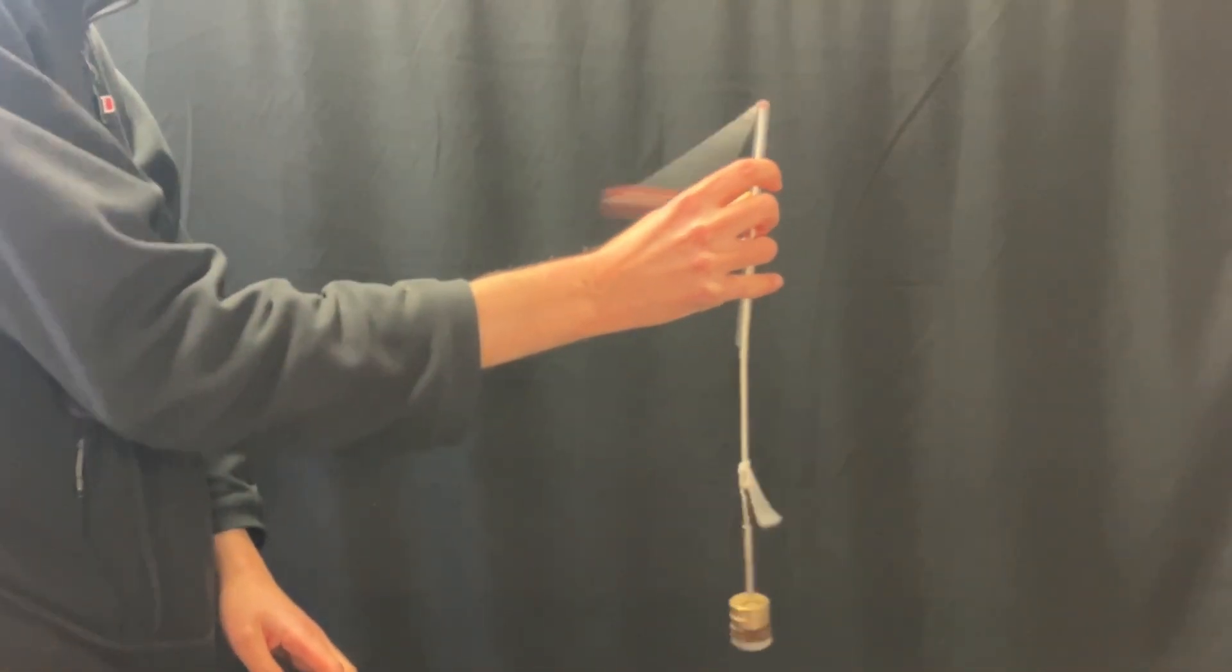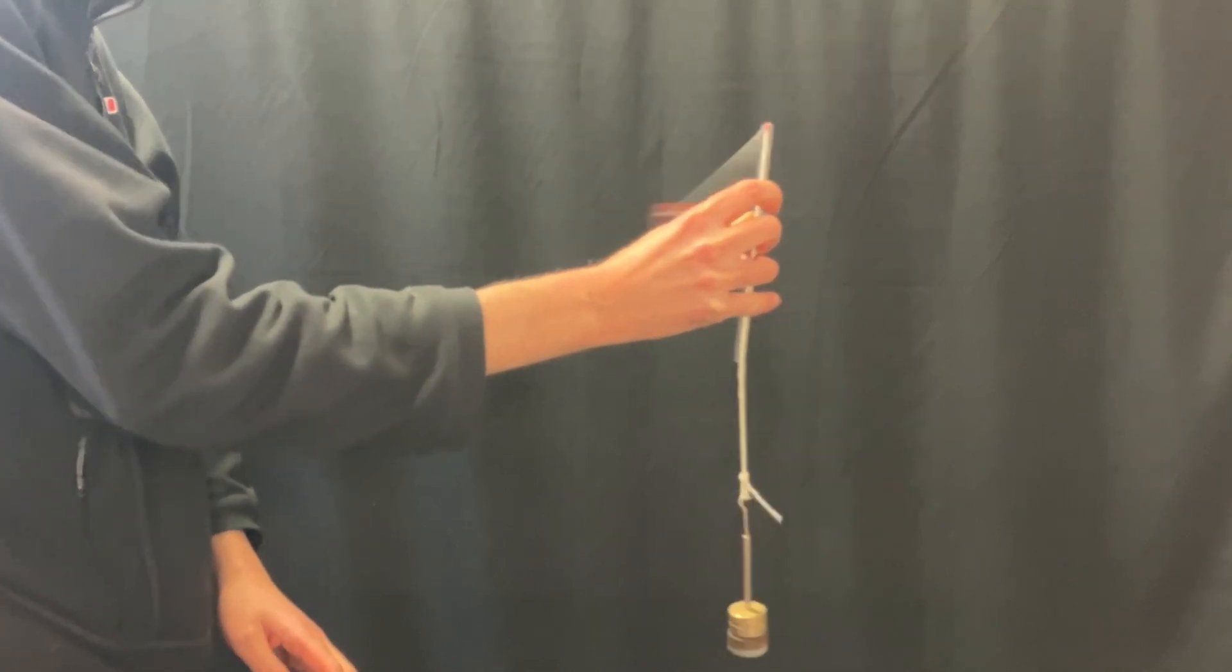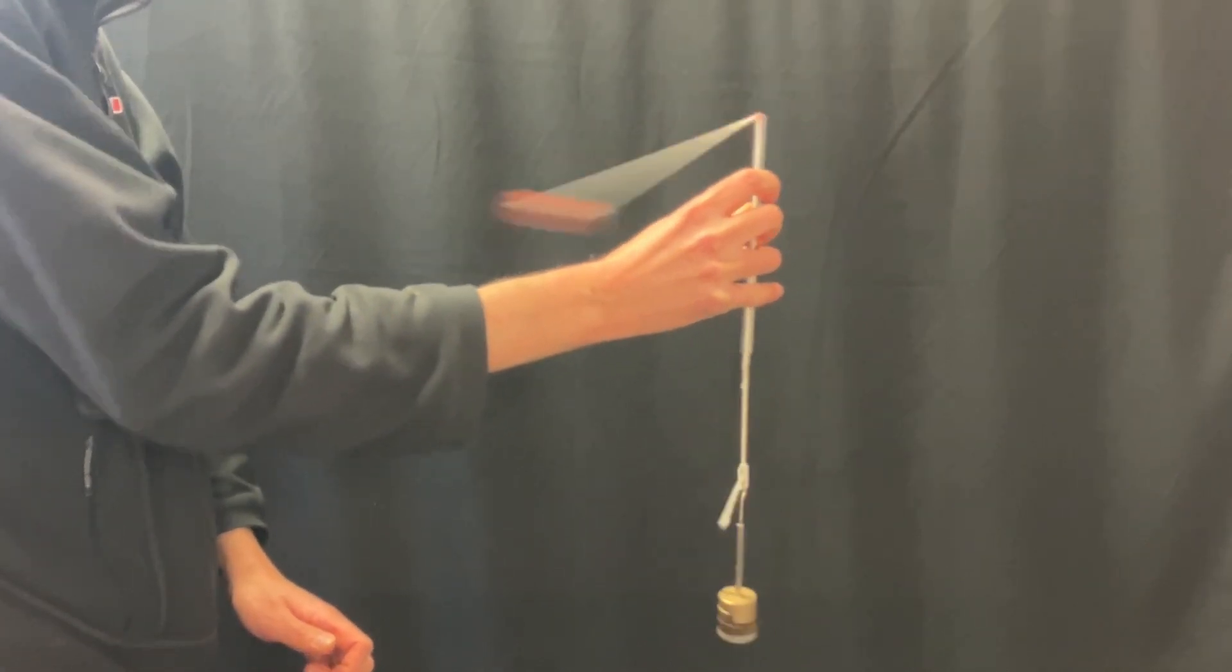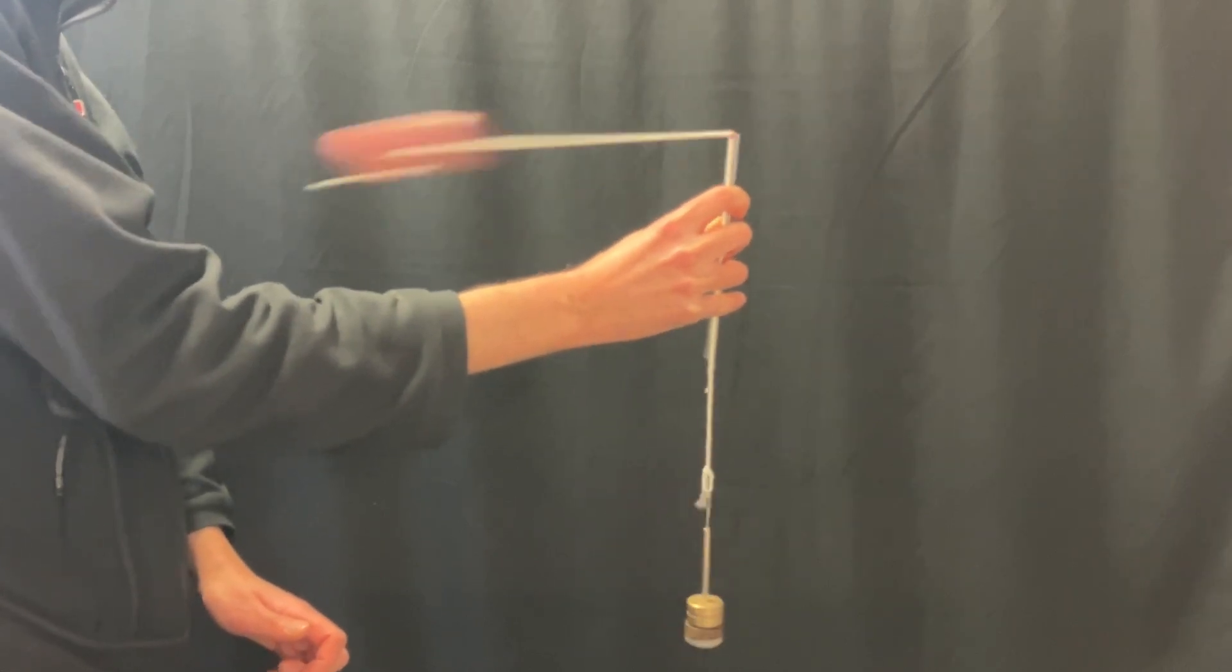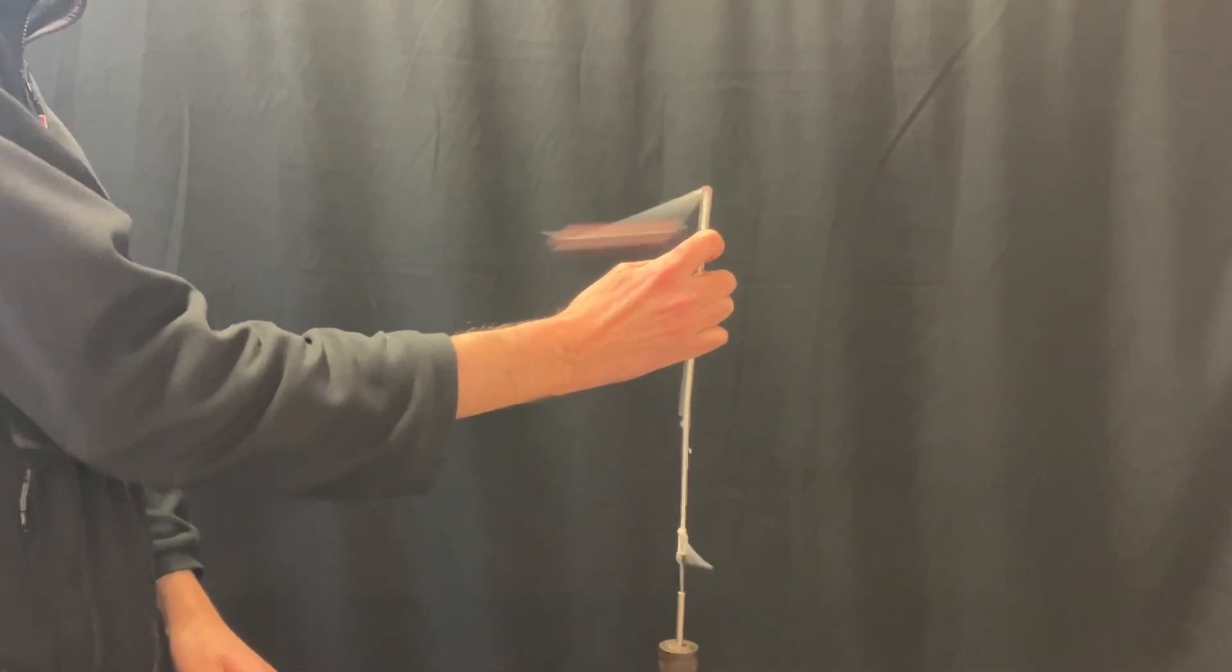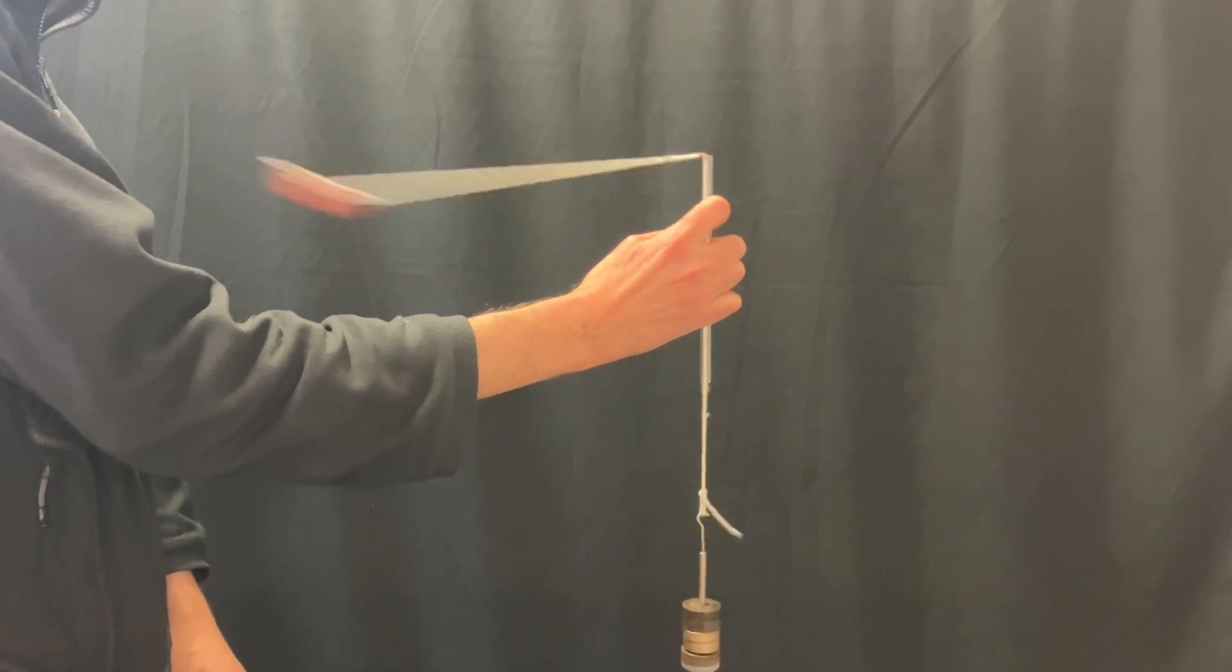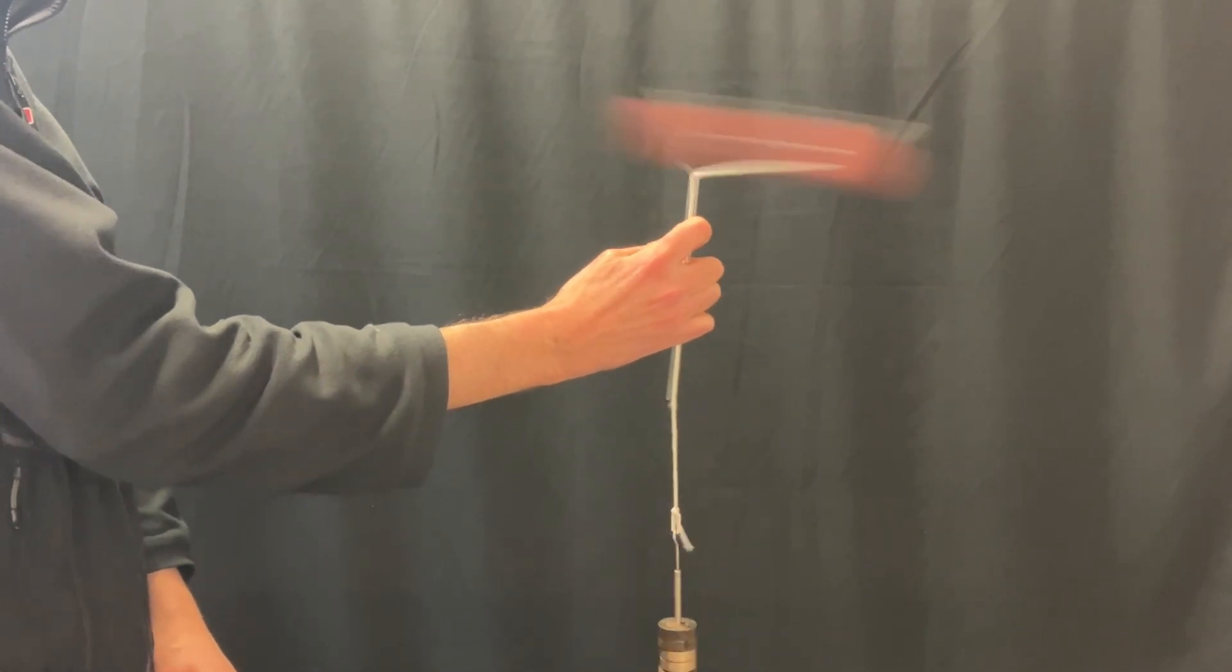You can see as we increase from 100 grams to 200 grams hanging on the end that we need to spin it faster with a shorter time period to remain stable. As we go up to 300 grams on the end, we need to spin it really much faster in order to get it stable.